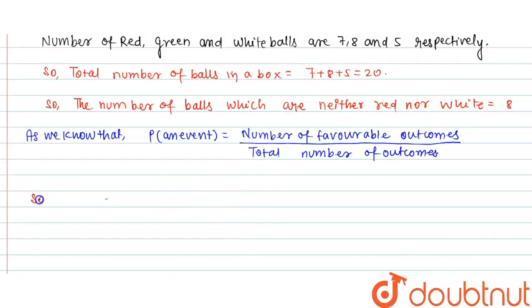So, probability that a ball drawn randomly is neither red nor white equals the number of balls which are neither red nor white